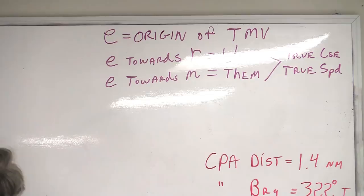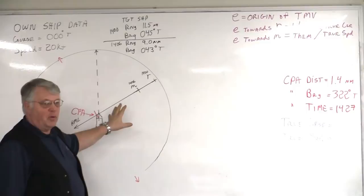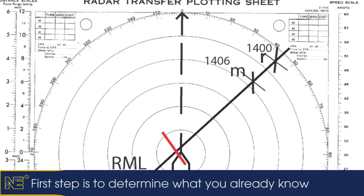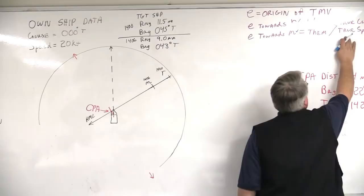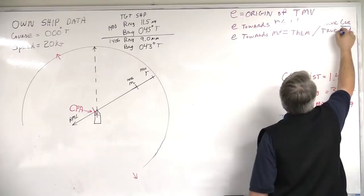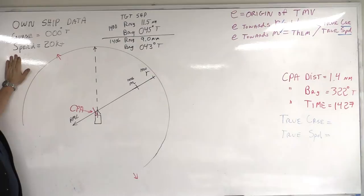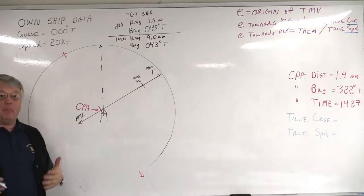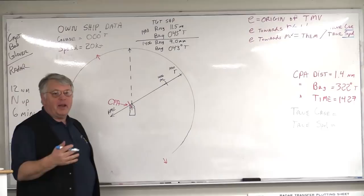We have to establish where E is. To do that, we ask ourselves: what do I know? I know where M is and I know where R is. I don't know where E is — that's what we're trying to find. But the only thing I know completely is our true course and true speed. So I can use that information to actually construct the triangle backwards — I can place E into the collision avoidance triangle by drawing it in backwards with the known information that is us.